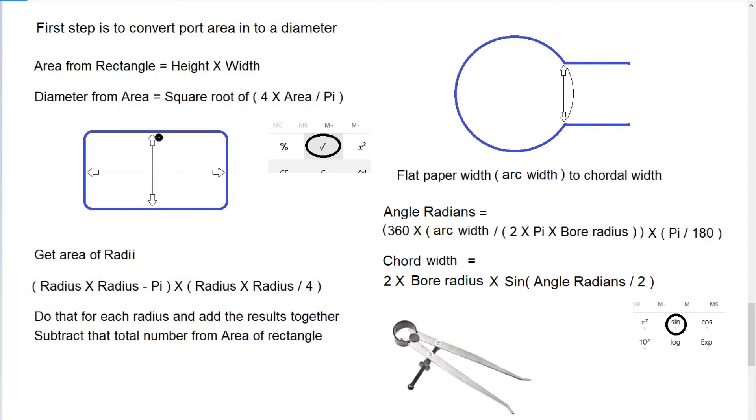That's the chord width. Likewise measure the height. Once we've got the height and width of the port, we can calculate our area, which is height times width. If the height's in millimeters and width is in millimeters, the area will be millimeters squared. Once we've got millimeters squared, we can convert that into a diameter for matching the round diameters of our pipe. To get our diameter, we take the area and do this calculation: four times our area divided by pi.